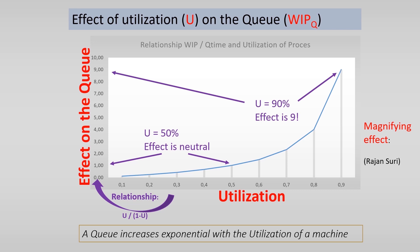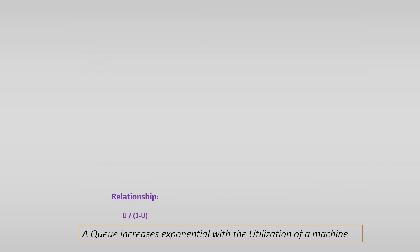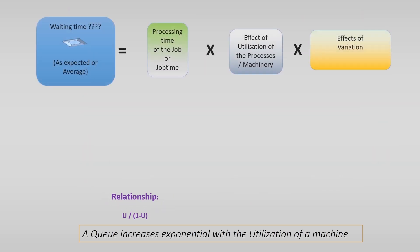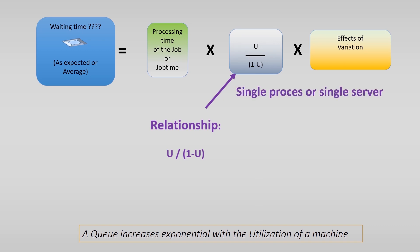So we can fill this in by u divided by 1 minus u in Kingman's equation. This is not the end of the story, because this is valid for one single process or one single server.